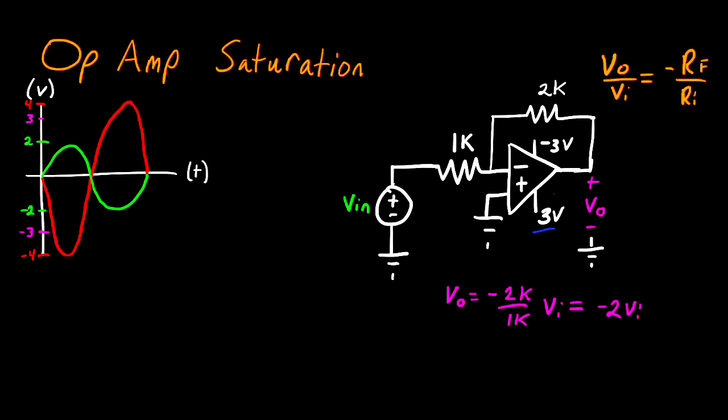In this case, we're given that the output's connected to a positive 3 volt and negative 3 volt supply. So what this effectively does is it limits the largest value that the op-amp can output to positive 3 volts and the lowest value to negative 3 volts.